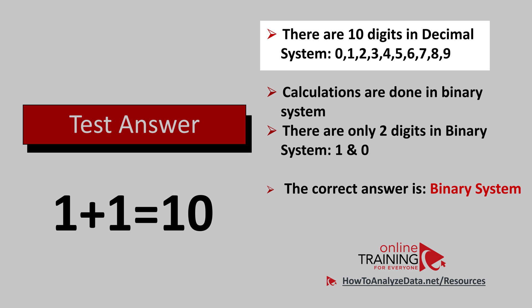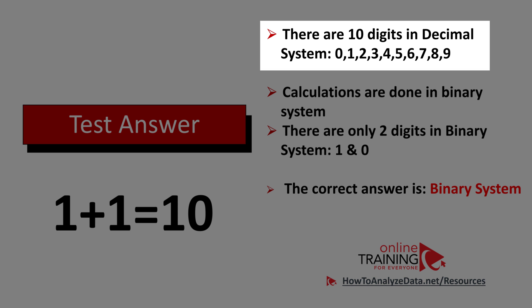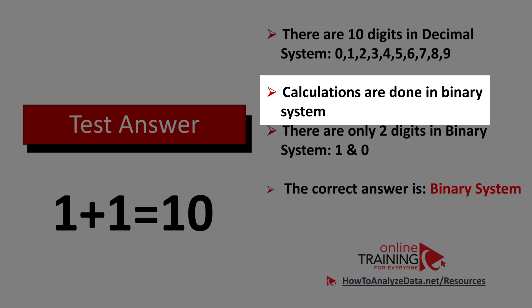Typically when we do calculations, we use 10 digits in the decimal system: 0, 1, 2, 3, 4, 5, 6, 7, 8, and 9. But here, calculations are done in the binary system. And there are only two digits in the binary system: 1 and 0. So what happens when you get a calculation in the binary system and you add 1 plus 1? What looks like 10 in the decimal system looks like 2 in the binary system. So the correct answer, this calculation is possible because of the binary system.